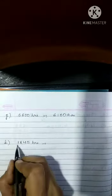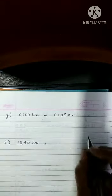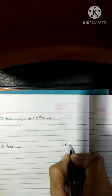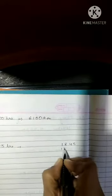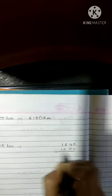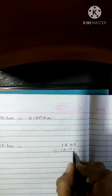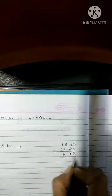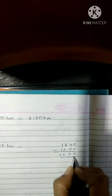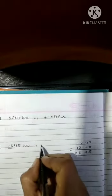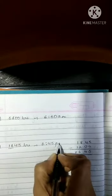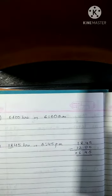Clear. Now 18. 18 is coming after 12. So how do we do? 18:45. In this, we will subtract 12. 5 minus 0 is 5, 4 minus 0 is 4, 8 minus 2 is 6. So what is the answer? 6:45 pm. Clear, everyone? Thank you, children.